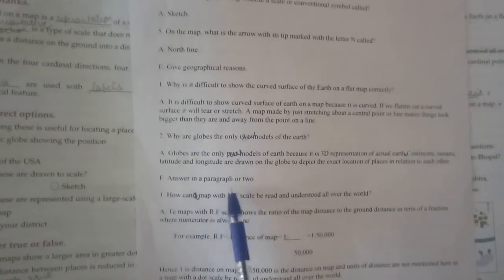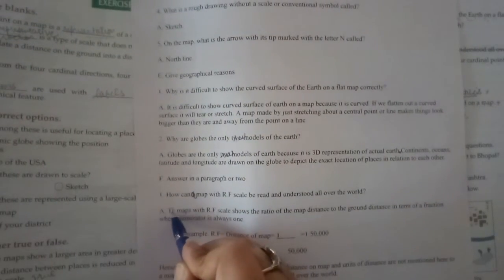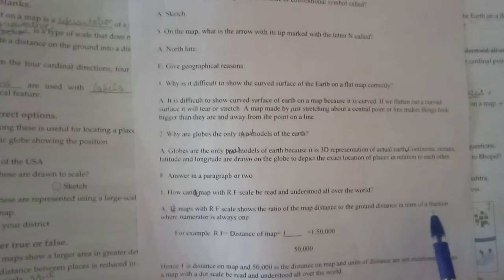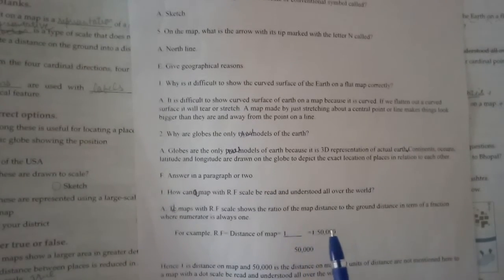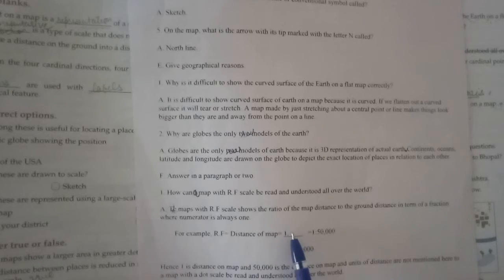Next is part F, answer in a paragraph or two. How can a map with RF, RF means representative fraction, RF scale be read and understood all over the world? The map with RF scale shows the ratio of the map distance to the ground distance in terms of fraction. It's a particular ratio that happens for the actual distance.